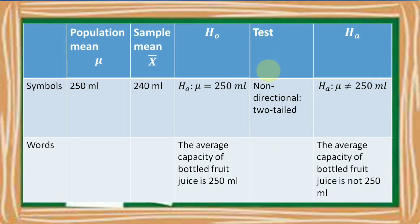And if the test is non-directional, or a two-tailed, our alternative hypothesis is — in symbol — mu is not equal to 250 ml. And in words, the average capacity of bottled fruit juice is not 250 ml.